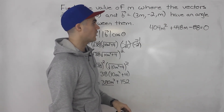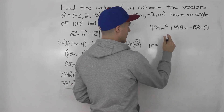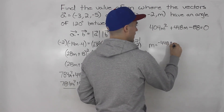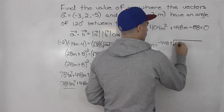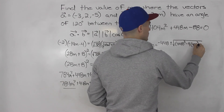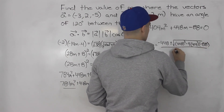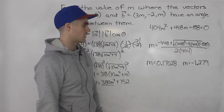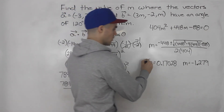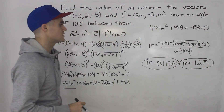Factoring this would take quite a while, so I suggest you just input it into the quadratic formula right away. The b value is 448, so that would be negative 448 plus or minus the square root of 448 squared minus 4 times the a value of 404 times the c value of negative 88, all over 2 times 404. When you do all that algebra, you'll get two values for m: m can be 0.17028, or m can be negative 1.279. So there are actually two solutions to this question.